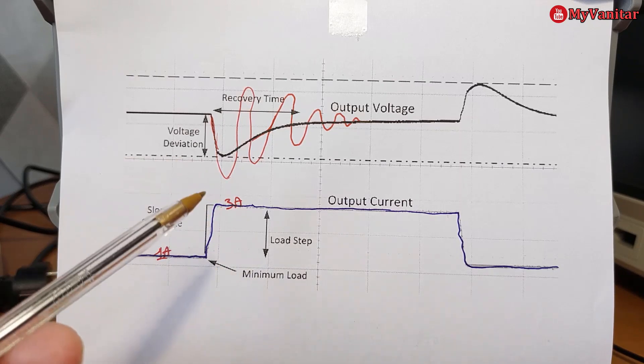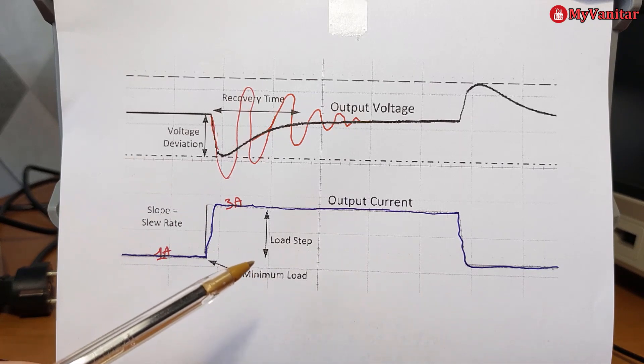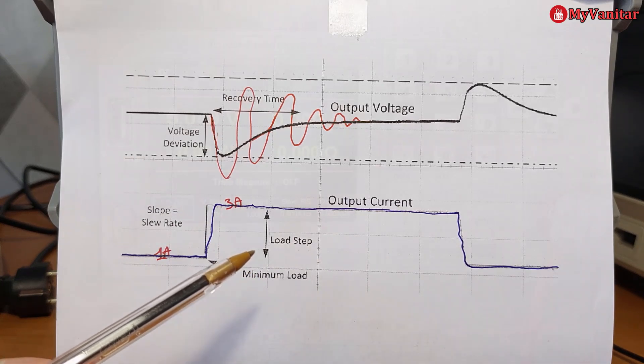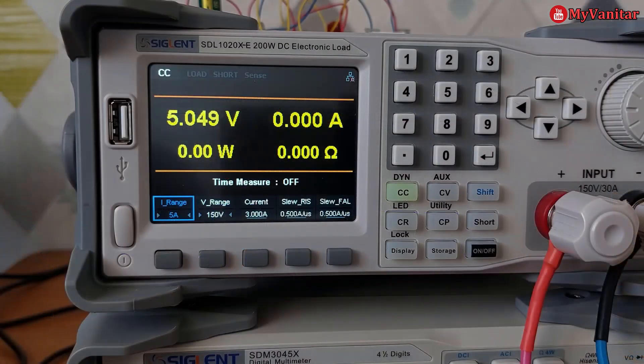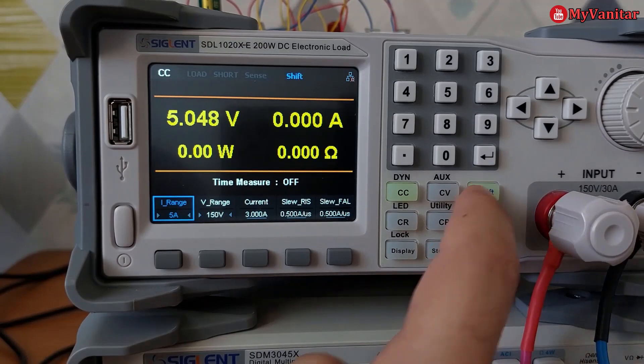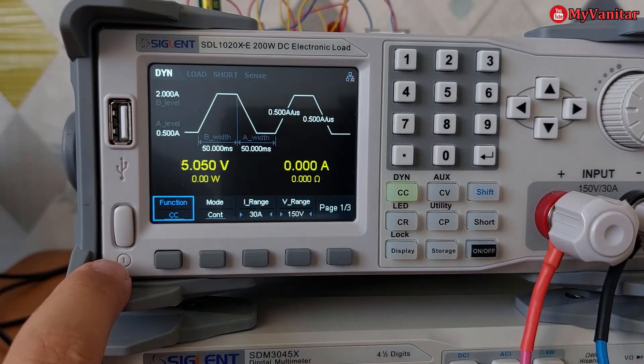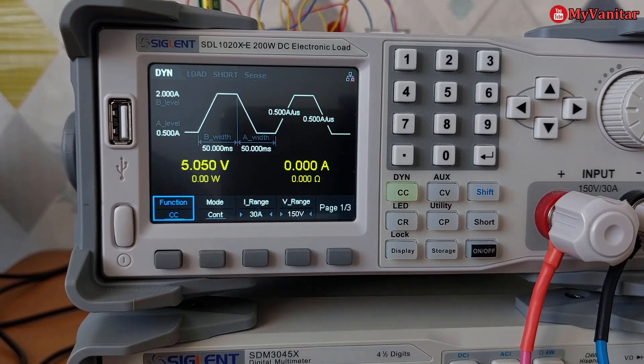Now I'm going to configure the DC load. Press the shift button and then CC. The function is CC and the mode is continuous because we're going to generate current pulses continuously.